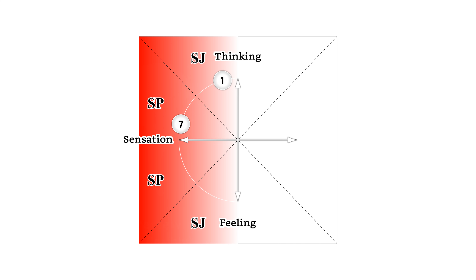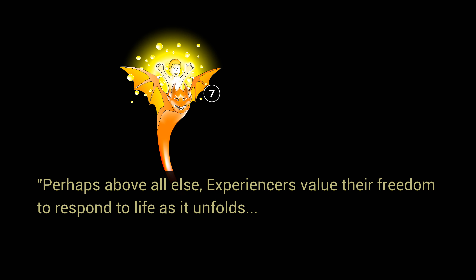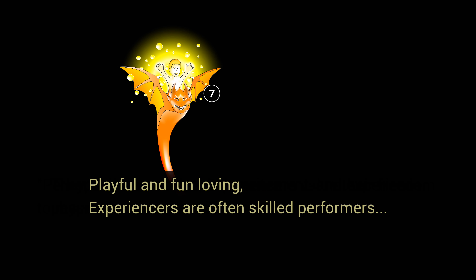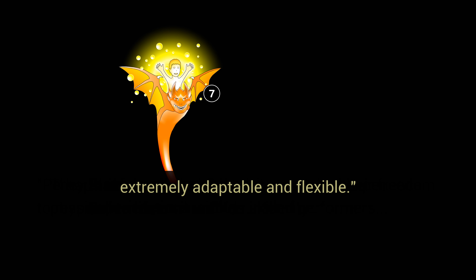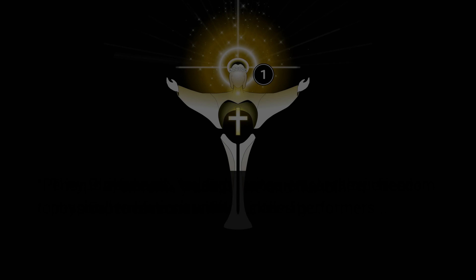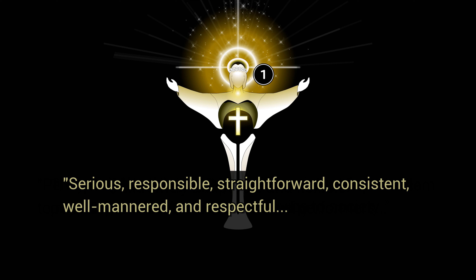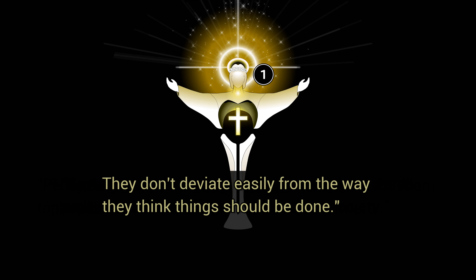These two temperaments are described by Paul Teeger and Barbara Teeger in the following way. Perhaps above all else, experiencers value their freedom to respond to life as it unfolds. They thrive on action and excitement, and experience physical sensations with an intensity. Playful and fun-loving, experiencers are often skilled performers, extremely adaptable and flexible. On the other hand, among the things that traditionalists value most are responsibility, duty, and service to society. Serious, responsible, straightforward, consistent, well-mannered, and respectful — they don't deviate easily from the way they think things should be done.